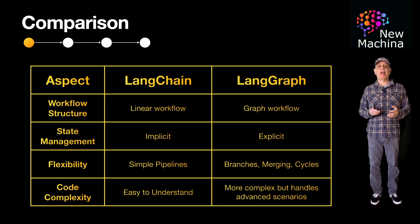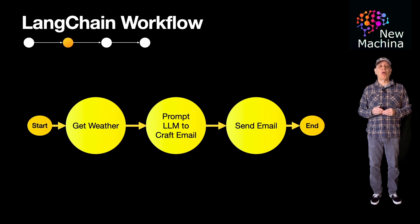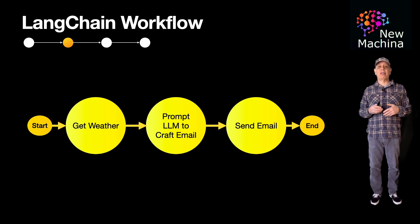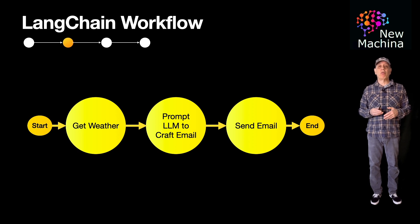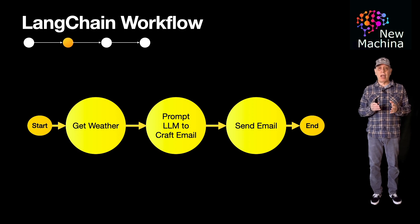Now we've compared the aspects of LangChain versus LangGraph, and I want to show you some workflow examples. The first workflow is fairly simple and is easily implemented using LangChain. The workflow is initiated by passing a city and an email address. The workflow first calls a weather service, passing the city using a weather API endpoint. The weather results are returned, and in the second step, an LLM is passed the weather results and prompted to summarize the weather and generate an email body. In the last step, an email is sent out using the email body generated in the previous step. You can see this is a simple, step-by-step, linear workflow.